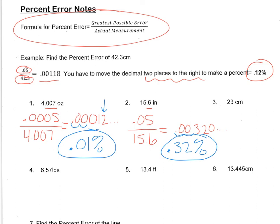Let's take a look at another one — let's do number three. The greatest possible error in this one: there are no numbers after the decimal point, so I'm not going to have any zeros for my greatest possible error. So it's just going to be 0.5 divided by 23. So if we do 0.5 divided by 23, the calculator says 0.02173. So if I move the decimal two places to the right, I get 2.17% error.